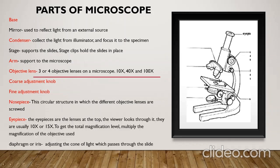This is a stage — here we can keep the slide. The arm supports the microscope. There are three or four objective lenses in a microscope: 10x, 40x, 100x, each having different magnifying capacity. Coarse adjustment knob and fine adjustment knob are both used to adjust the slide and focus it properly. The nosepiece is the circular structure in which different objective lenses are screwed.